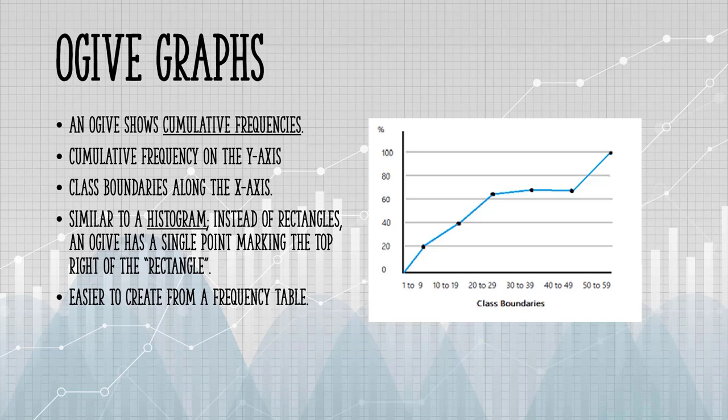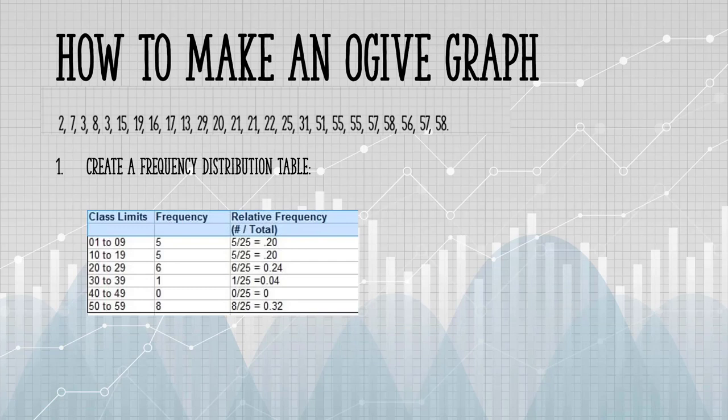It's usually easier to create this kind of graph from a frequency table. I'm going to create an ogive graph for this set of data.